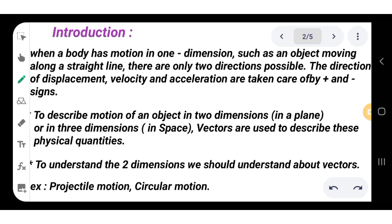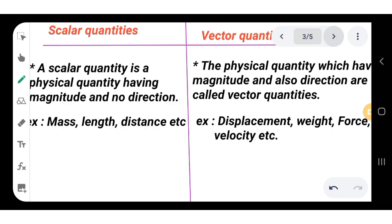To understand two-dimensional motion, we need to understand vectors. You may already know about vectors, but it is my duty to revisit what vector quantities and scalar quantities are. In two-dimensional motion, we will concentrate on two types: projectile motion and circular motion.